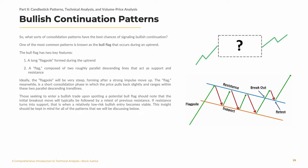So what sorts of consolidation patterns have the best chances of signaling bullish continuation? One of the most common patterns is known as the bull flag that occurs during an uptrend. The bull flag has two key features: one, a long flagpole formed during an uptrend, and two, a flag composed of roughly two parallel descending lines that act as support and resistance. Ideally, the flagpole will be very steep, forming after a strong impulse move up. The flag, meanwhile, is a short consolidation phase in which the price pulls back slightly and ranges within these two parallel descending trend lines. Those seeking to enter a bullish trade upon spotting a potential bull flag should note that the initial breakout move will typically be followed by a retest of previous resistance. If resistance turns into support, that is when a relatively low-risk bullish entry becomes viable.